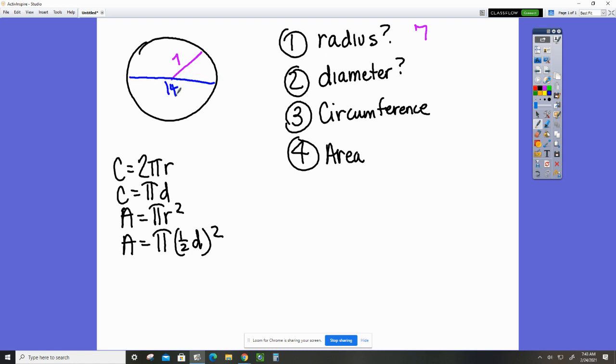So your answer will be typed in as 14. For the circumference, you will have to choose a formula. I'm going to choose this one. Do you have to use that one? No. So C equals 2πr. I'm going to substitute in the r for the radius.